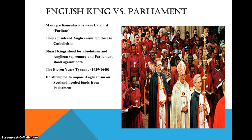The Stuart kings stood for absolutism and Anglican supremacy, and parliament stood against both. There was a tension between the English king and parliament, and parliament ended up getting shut down essentially — this is what the eleven years of tyranny refers to.